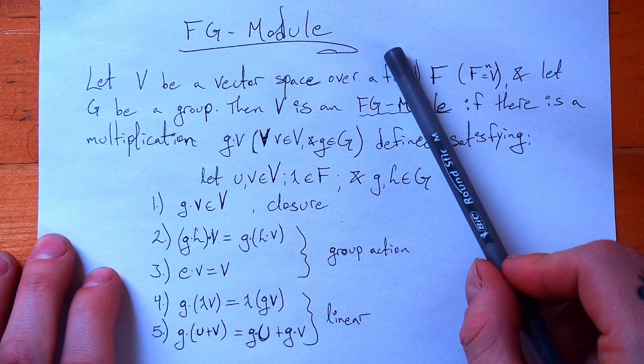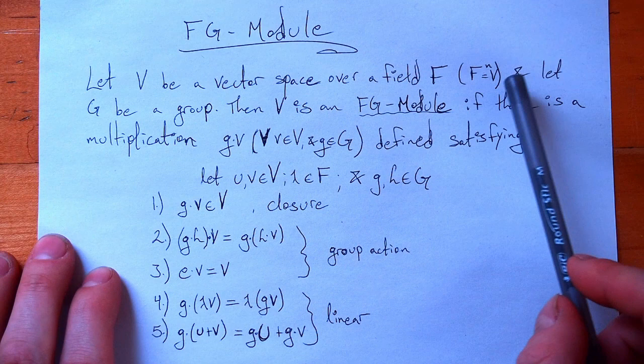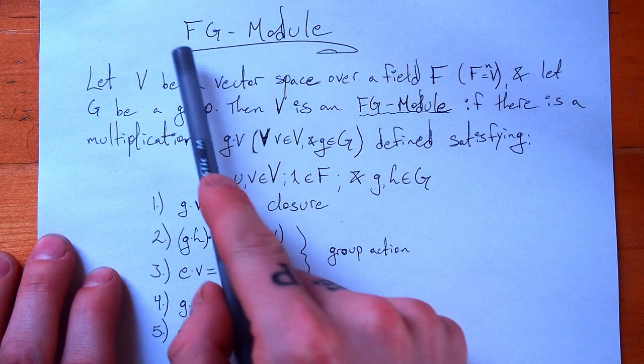We start off with a vector space V over some field F. So V equals Fⁿ — that could be Rⁿ or Cⁿ. And G is a group. So that's what the F and the G are: F tells us what our vector field is, and G tells us what our group is.